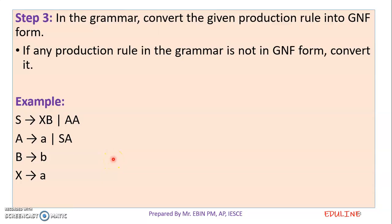Now we have to check the left recursion — we have to eliminate the left recursion. We have left recursion. The first production is S tends to XB — no. S tends to AA: the left side symbol is S and the right side first symbol is X. So this is not left recursion. Then A tends to SA — this is not left recursion.